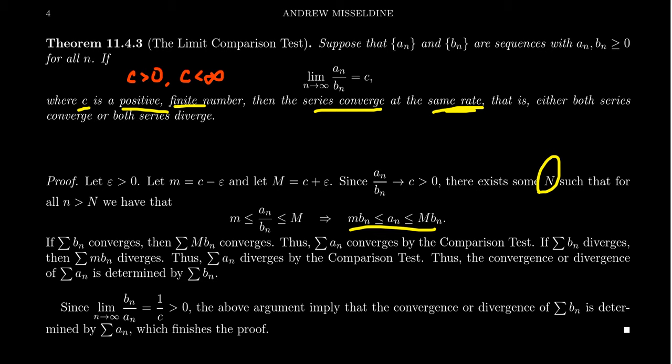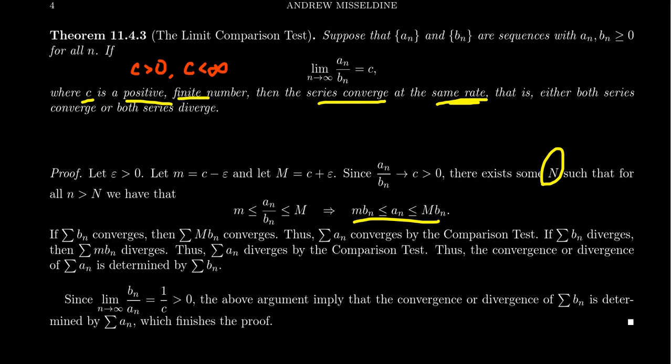So this limit comparison test piggybacks off the comparison test by turning a limit statement — an asymptotic statement — into an inequality for which the comparison test applies. This tells us that when b is divergent, a is divergent, and when b is convergent, a is convergent. Who is on top and who is on bottom in this ratio is somewhat irrelevant, since if c is a positive finite number its reciprocal is likewise positive and finite, so the same argument works with the roles switched.